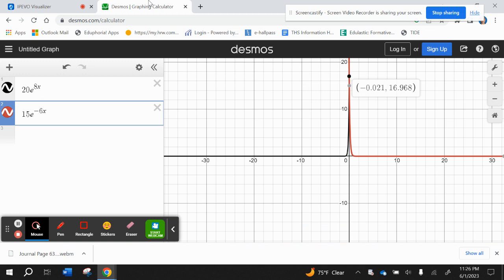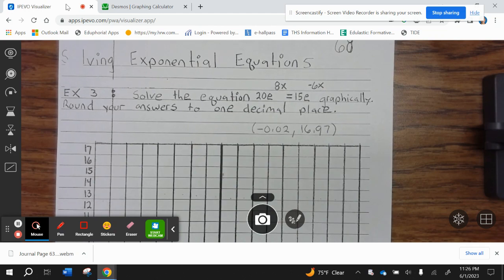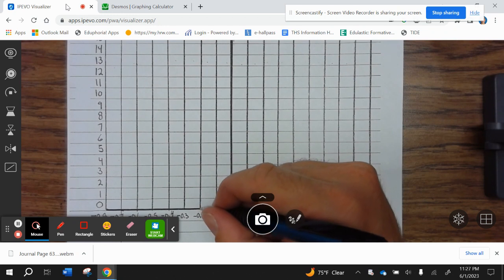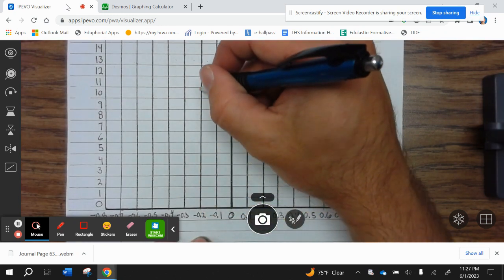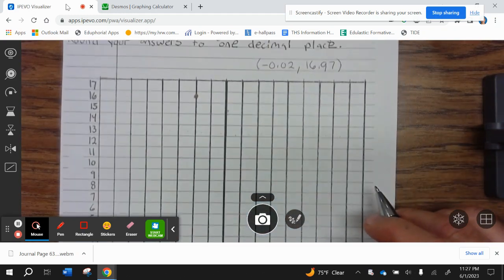Let's write that point down. Negative 0.02, 16.9. I rounded this to two decimal places. So let's get the point of intersection first. Negative 0.02 is right here. 16.9 is pretty much 17, which is about right here.